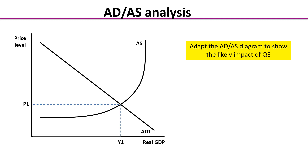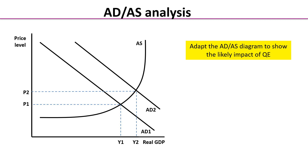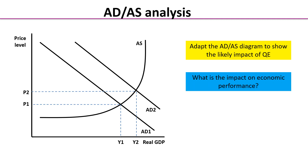Here we have our AD/AS analysis. We've moved to a macro diagram with price level and real GDP. Show on there the effects of quantitative easing — we can see aggregate demand shifting to the right. As always, we must tell the examiner what has happened to economic performance: we've seen inflationary pressure and the general price level rise from P1 to P2, but we've also seen real GDP rise from Y1 to Y2.